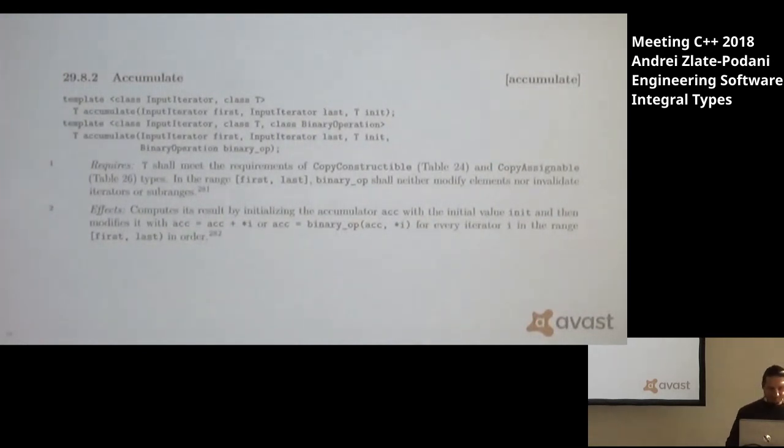Now the standard has for maybe 20 years if not more the accumulate function. Now the accumulate function has no, doesn't say anything about overflow and also it doesn't really say anything about requirements on the types. You could still have the situation like previously that conversions would be performed and all that. And not only that but accumulate has access to the range of data so in theory it could provide the correct result as long as the sum will fit the type you are giving it to.